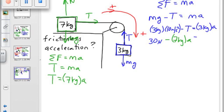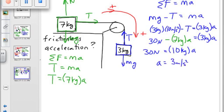And then that equals three kilograms times A. So that's 30 newtons minus 7 kilograms A equals 3 kilograms A. And so A is three meters per second squared.